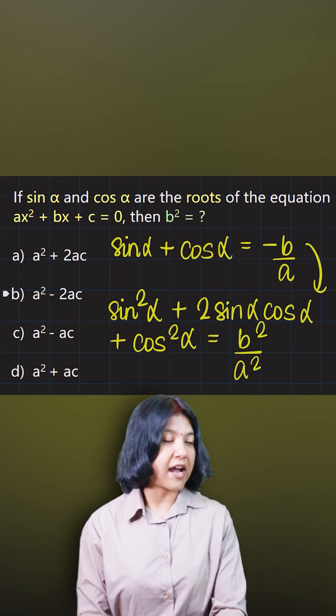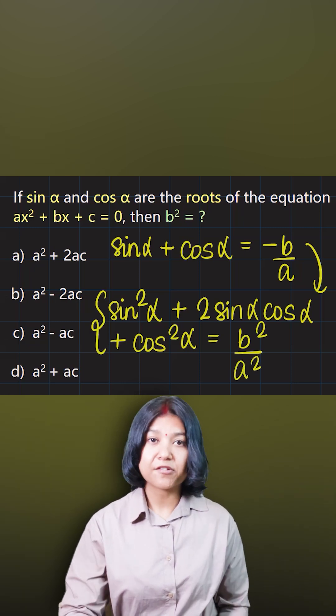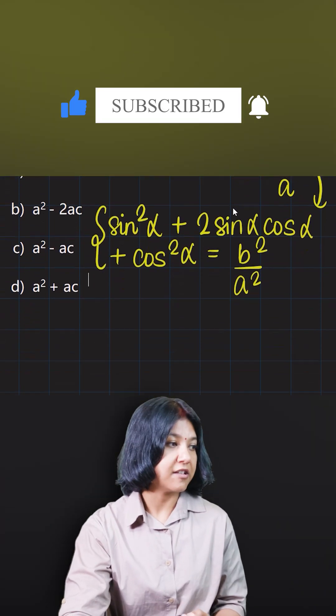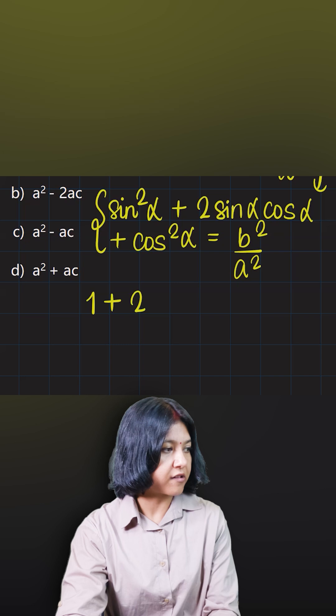Now note that sin² α plus cos² α you can reduce that to 1 because I think you know that it comes from the identity. So we just got 1 plus 2 sin α cos α.